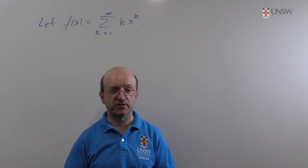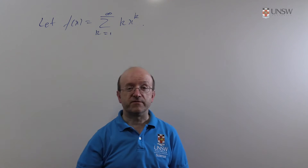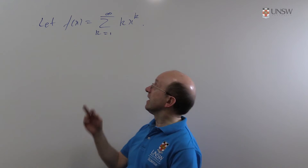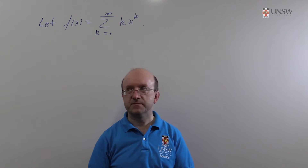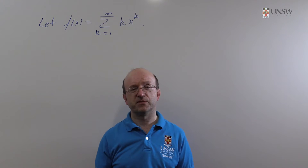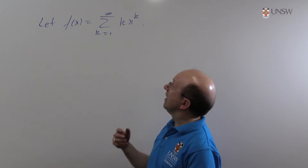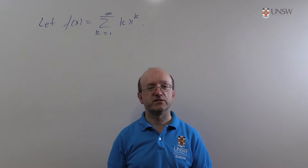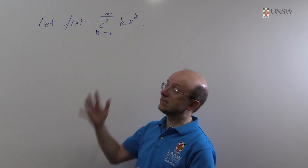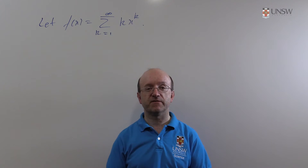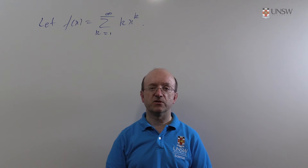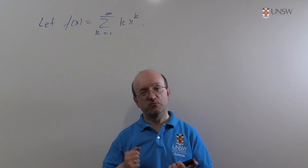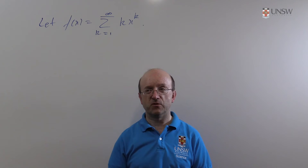G'day. In this video we're going to be looking at analysing a function that's defined in terms of a power series. In this case f of x is sigma k x to the k, sum from 1 to infinity. It could be sum from 0 to infinity of course, but the 0 term will be 0 anyway. In the second half of the video we're going to look at what the function actually is in a closed form.